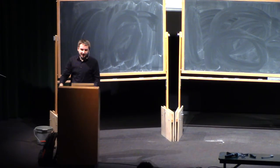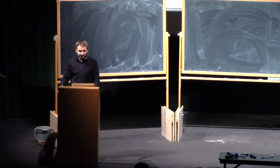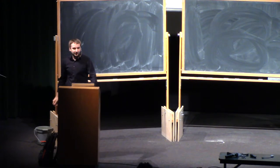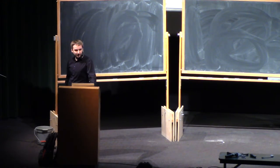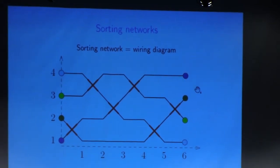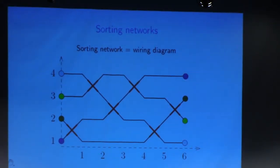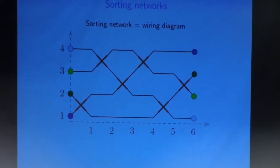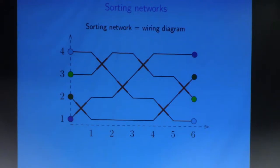Geometrically, you can identify sorting networks with various things, which might explain the name. One nice representation is a wiring diagram. You think of having n wires — here n equals 4 — ordered increasing at first: 1, 2, 3, 4. At the last moment they're reversed. You link them by wires and at each point in time only two adjacent wires are allowed to swap. That wiring diagram is the geometric interpretation of the sorting network.